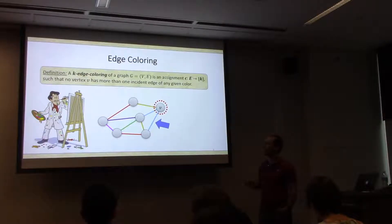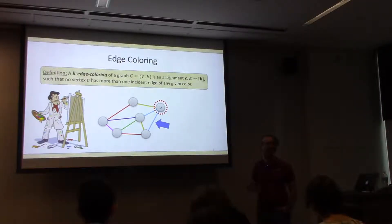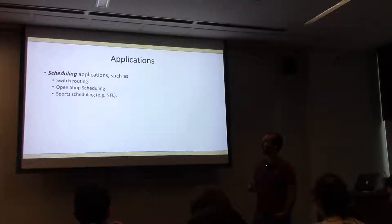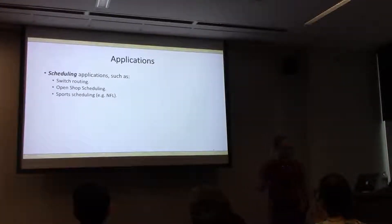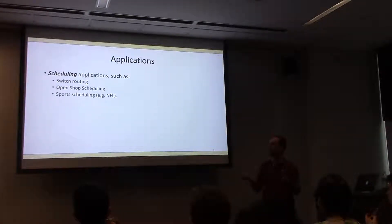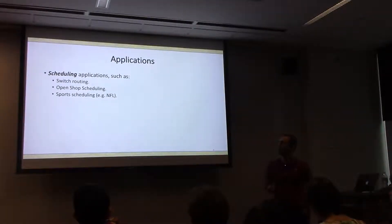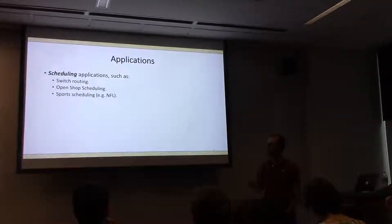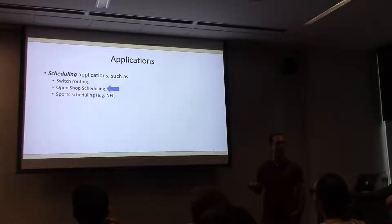This is a classic combinatorial problem, but since we're in an algorithms or theory seminar, let's talk about a few algorithmic applications. This is generally used for all kinds of scheduling applications with two agents involved in every task — for example, switch routing, open shop scheduling, sports scheduling. Let me focus on one of these applications: open shop scheduling.